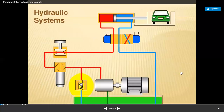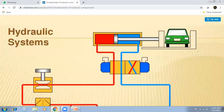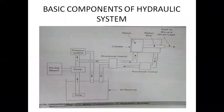You can see the working of a hydraulic system and the line diagram of the basic components. The different components involved include oil reservoir, filter, pump, pressure control valve, direction control valve, functional control, and actuators. Additionally, there is a cylinder with a piston and piston rod, and a functional control valve.